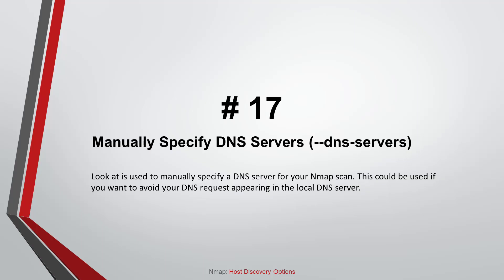Command number seventeen: Manually Specify DNS Servers. This option is used to manually specify a DNS server for your Nmap scan. This could be used if you want to avoid your DNS requests appearing in the local DNS server logs.